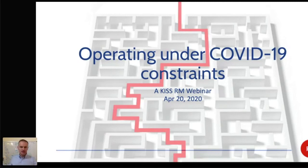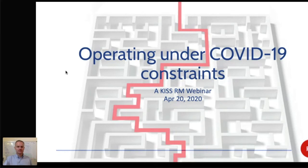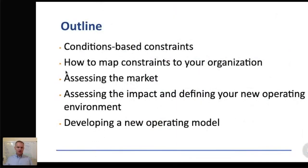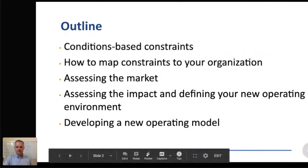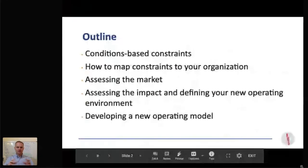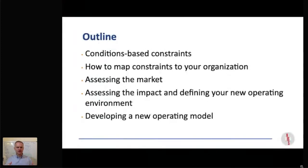Okay, so hopefully everyone can see the front page there. I'm just going to run through a few things with that in mind. I want to talk a little bit about what I mean by constraints, and then rather than looking at what the constraints could be, try to put them into some kind of structure that looks around the conditions that would lead to those constraints. And then a little bit of time on how you could map those to your organization or your situation.